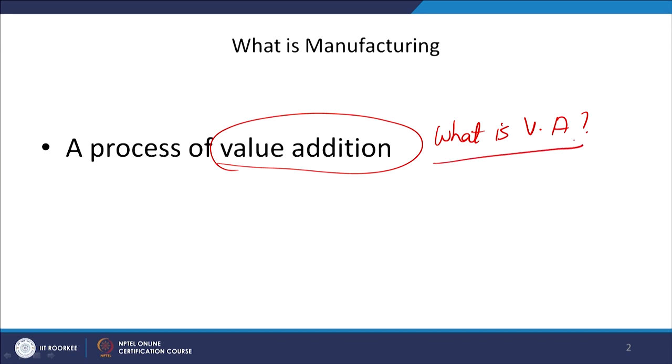If we understand this meaning of value addition — particularly what is value and what is non-value — then we are able to do miracles in our organizations. But many times as managers, we are unable to identify what is value and what is non-value, and we waste our resources in non-value adding activities. When you are wasting your resources in non-value adding activities, it incurs extra cost, it may take more time, and therefore you lose competitiveness. So rightful identification of value is very, very important for understanding and taking advantage of production and operations management.